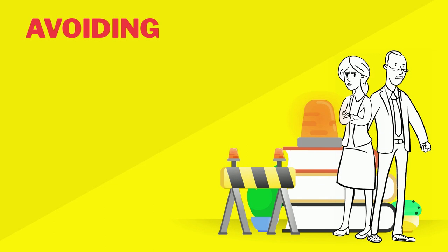Next is avoiding. People use this conflict management strategy when they know that they don't have any authority over the other person. Instead, they avoid confrontation by ignoring or avoiding the conflict entirely.